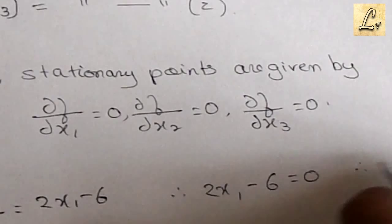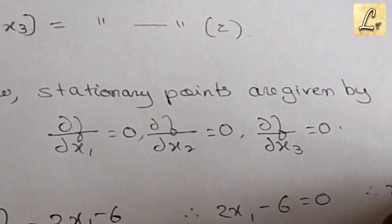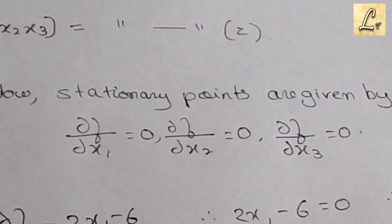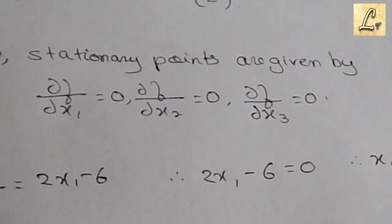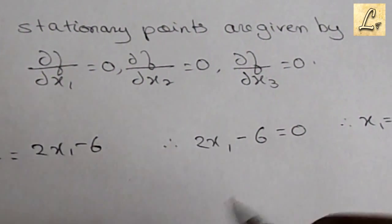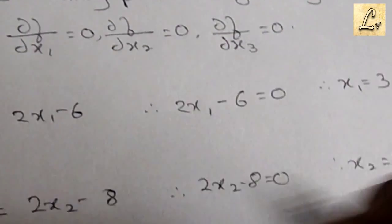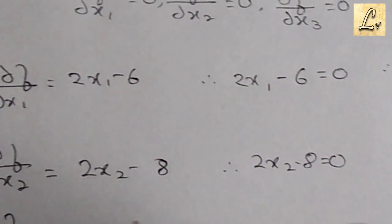Now we'll do the same for the remaining variables, taking partial derivatives. Here we get x2 to be 4 and x3 to be 5.